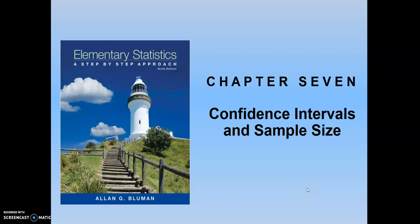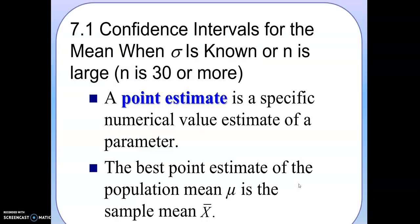Chapter 7: Confidence Intervals and Sample Size. Chapter 7.1: Confidence Interval for the mean when population standard deviation sigma is known, or n, the sample size, is large. When we say large, it means n is either 30 or more than 30.